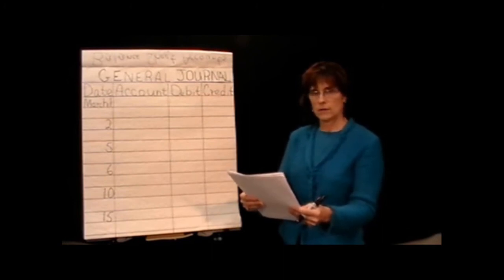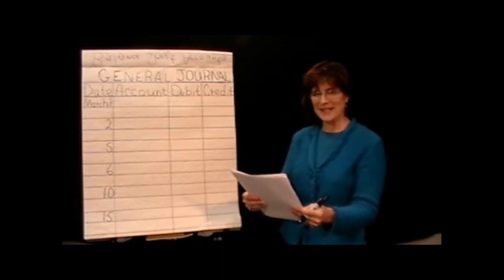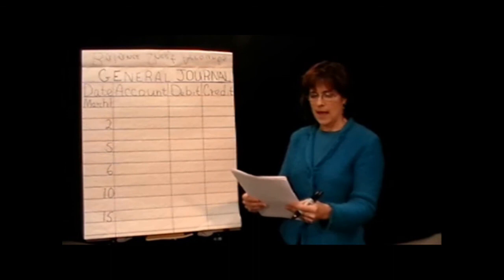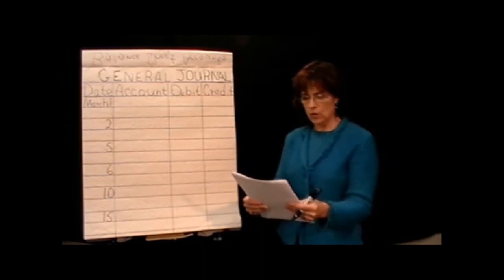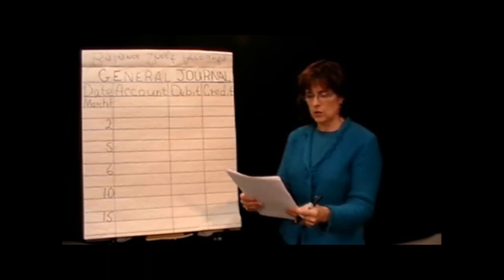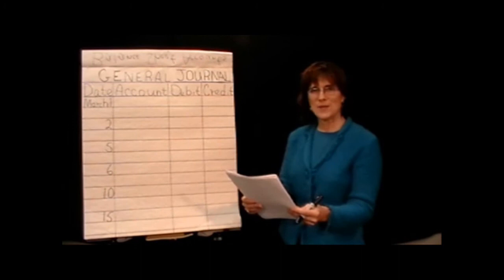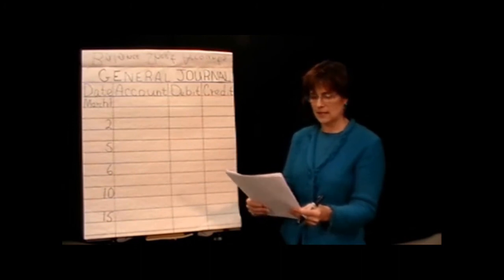And then our equity accounts are our capital stock, retained earnings, and dividends. Then listed next are our revenues, revenue account, which is fees earned. We just have one revenue account. And then we have a whole lot of expense accounts: rent expense, advertising expense, utilities expense, and miscellaneous expense. The easiest way to identify an expense account is it always ends in the word expense.